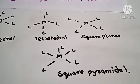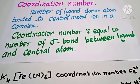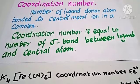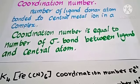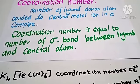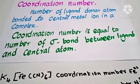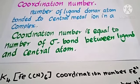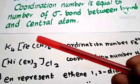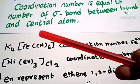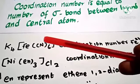Coordination number is defined as the number of ligand donor atoms bonded to the central metal ion in a complex. It is equal to the number of sigma bonds formed between the ligands and the central metal atom. For example, in potassium ferrocyanide, cyanide is the ligand, so the coordination number of Fe2+ ion is 6.